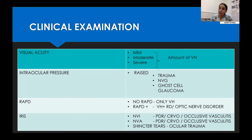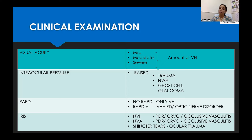In vitreous haemorrhage, the posterior segment is often not visible, so we need to pick up clues from the anterior segment. If intraocular pressure is high, rule out neovascular glaucoma, which occurs in ischemic retinopathies, or ghost cell glaucoma. A plain vitreous haemorrhage will never cause RAPD; if RAPD is present, there is an underlying cause such as retinal detachment or optic nerve disorders.